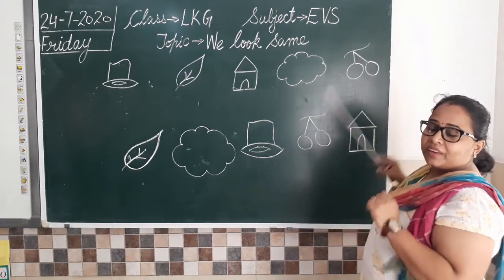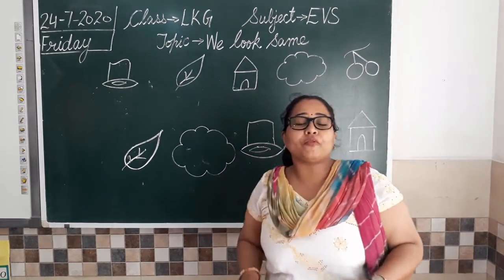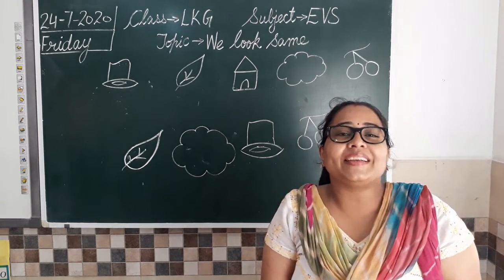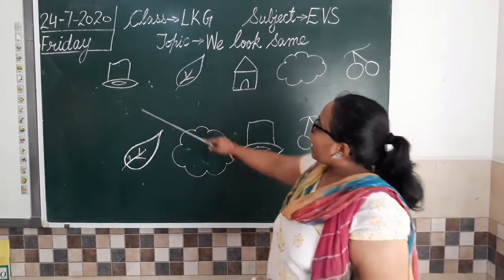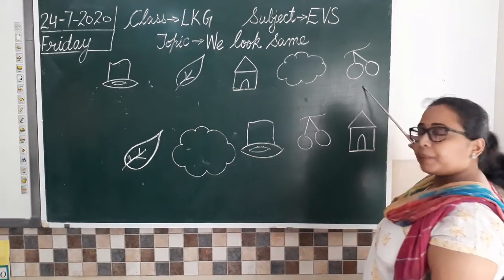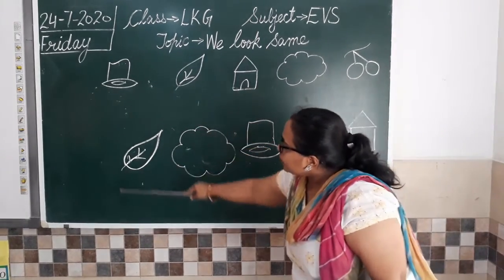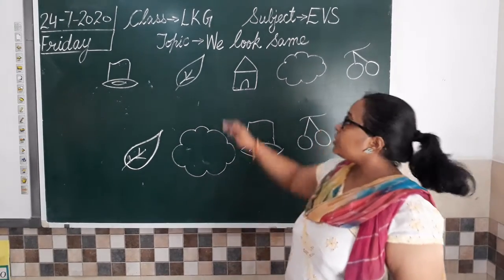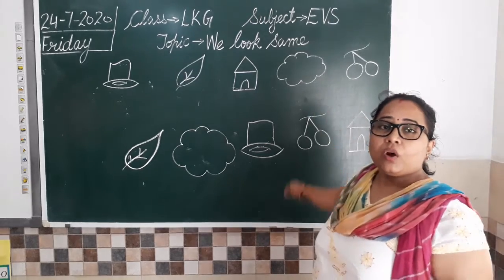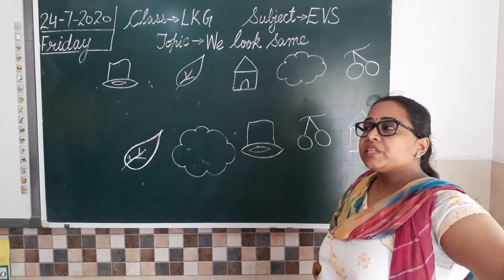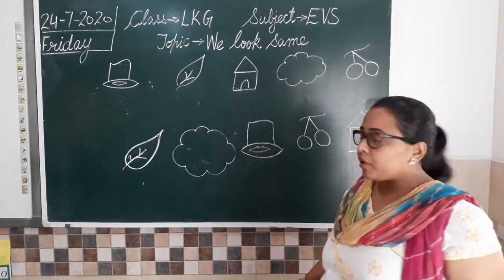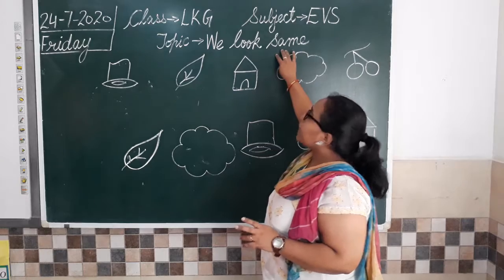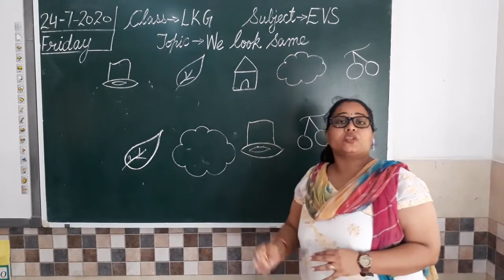And what is this? Cherries. It's a very yummy fruit. Can you tell me what is the color of cherries? Cherries are red in color. Now I have drawn these pictures here — you can see them. But the same pictures have also been drawn below. And what is the difference? The difference is that they are not in the same order below as they are above. We have to match them — that means 'we look same.' The same-looking pictures, we are going to match those pictures.